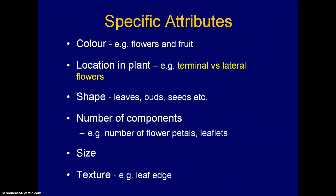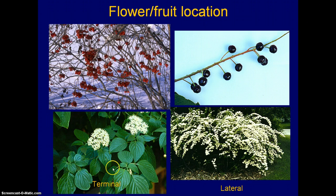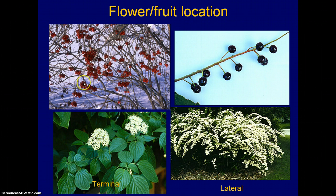The location of flowers and fruit on the plant can also be important. We're dealing here with what we call terminal versus lateral flowers. On the left-hand side, you can see a cluster of flowers at the tip of a branch — those are called terminal. On the right, the flowers are all along the branch of the spirea, so those are lateral. The fruit of the highbush cranberry clusters hang off the ends of branches, which is terminal.